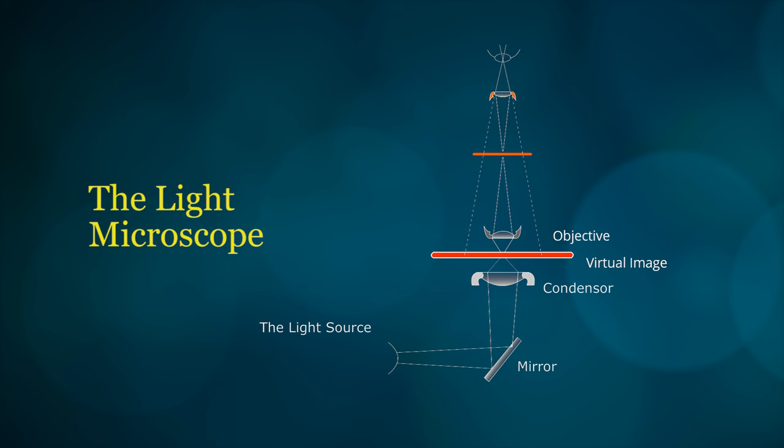The light microscope uses light as its source of radiation. Through a series of glass lenses, the light produces a magnified image of the specimen.